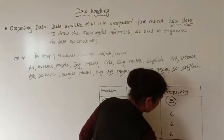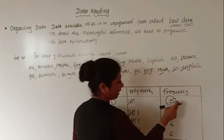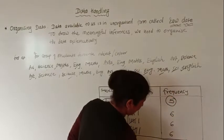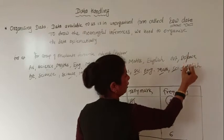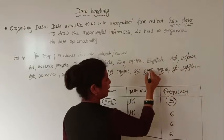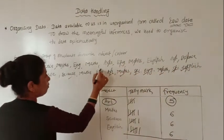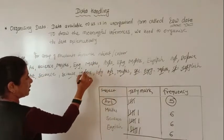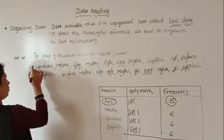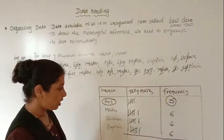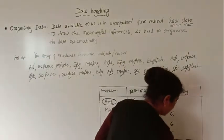We can also tally the total number of students: 6 plus 6 is 12, plus 6 is 18, plus 5 is 23. Counting all tally marks gives us 23 total students, verifying the organized data.